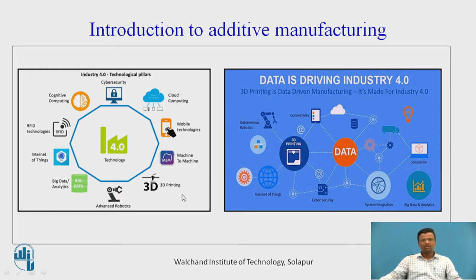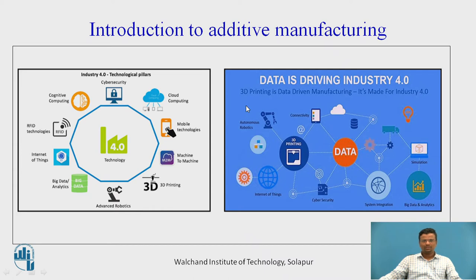Additive manufacturing is also called 3D printing or rapid prototyping — the meaning is the same. There is another diagram regarding Industry 4.0 where data is driven by Industry 4.0, which consists of different technologies. Mainly it consists of 3D printing, and huge data is driven through manufacturing with the help of different components of Industry 4.0 like artificial intelligence, Internet of Things, database management systems, cloud computing, etc.